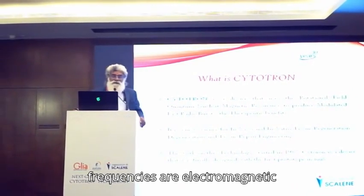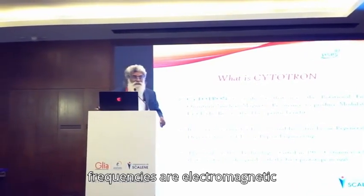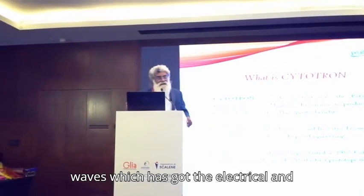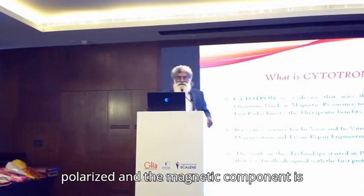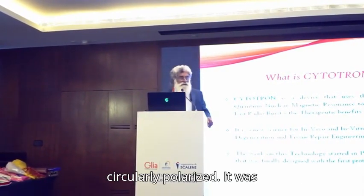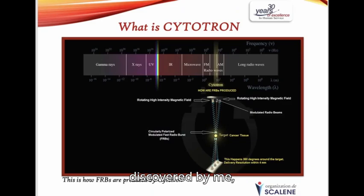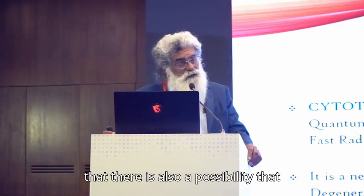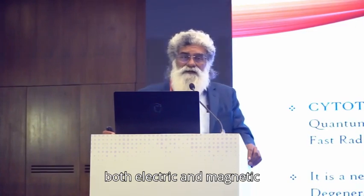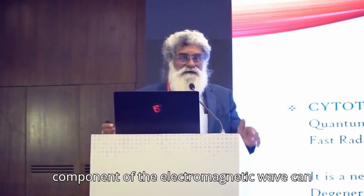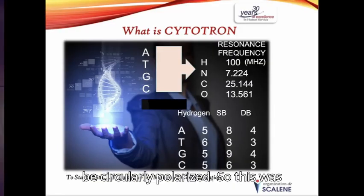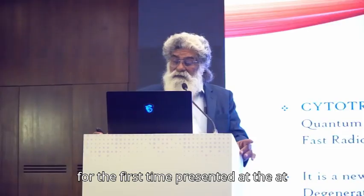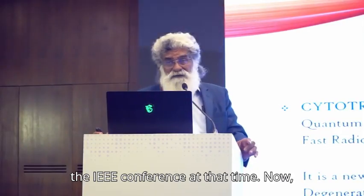These radio signals are electromagnetic fields which have an electrical and a magnetic component. The electrical component is linearly polarized and the magnetic component is also linearly polarized. It was discovered that there is also a possibility that both the electrical and magnetic components can be saturated with one of these — this was one of the first times it was presented at the ICOM conference.